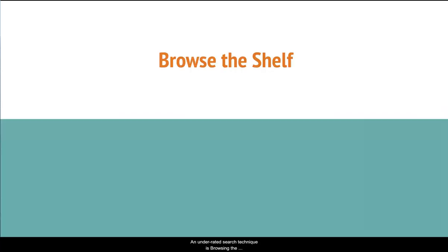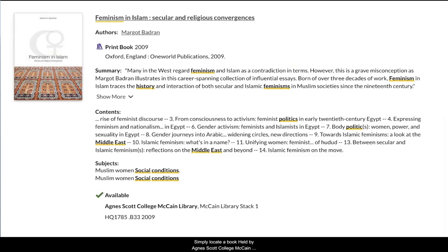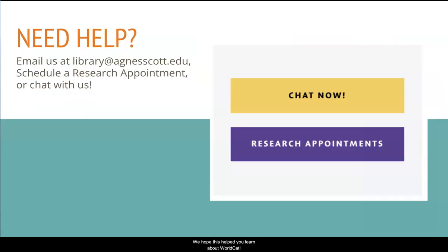An underrated search technique in WorldCat is browsing the shelf. All books in libraries are located next to other books that are similar in some way. For any item held by Agnes Scott College, WorldCat provides an option to browse the shelf. Simply locate a book held by Agnes Scott College, McCain Library, click on the title to get the item record, and scroll to the bottom of the page to the browse the shelf section. A gallery box will appear that allows you to see books owned by McCain Library that have a call number either before or after the work that you found. Use the arrows on either side of the box to see additional books on that shelf.